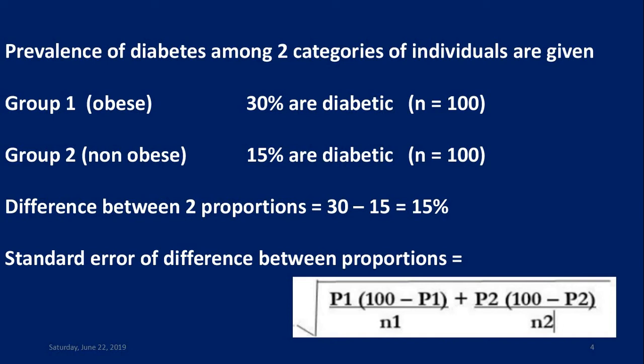Difference between the two proportions is calculated as 30 minus 15, which is 15%. The standard error of difference between proportions is calculated using the formula: square root of P1 multiplied by (100 minus P1) divided by N1, plus P2 multiplied by (100 minus P2) divided by N2.